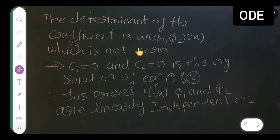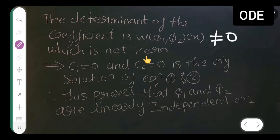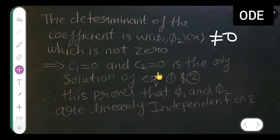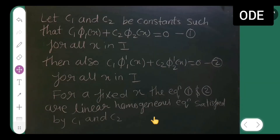The determinant of the coefficients is W(phi 1, phi 2)(x), which is not equal to 0. This means the Wronskian is non-zero, which implies that c1 = 0 and c2 = 0 is the only solution of equations (1) and (2).